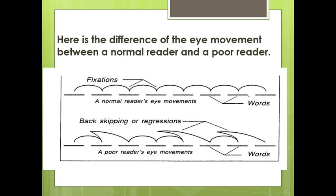Here is the difference in eye movement between a normal reader and a poor reader. For a normal reader, fixations follow a straight pattern. For a poor reader, fixations and interfixations are interrupted with backskipping or regression. Poor readers tend to backskip or regress most of the time, probably because they do not understand many words or encounter unfamiliar vocabulary, which is why they tend to go back to previous words.